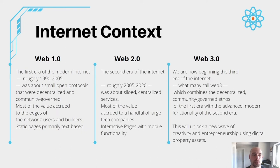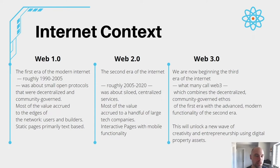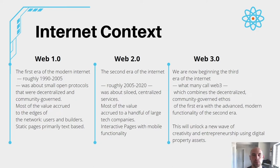For some context, Web 1.0 was the first era of the modern internet, roughly 1990 to 2005. It was about small open protocols that were decentralized and community governed — a small group of nodes and computer science enthusiasts who set up networks. It actually started before 1990 but didn't get popular until then. Most of the value accrued to the edges of the network for users and builders, and it was primarily static pages and text-based web queries and servers.